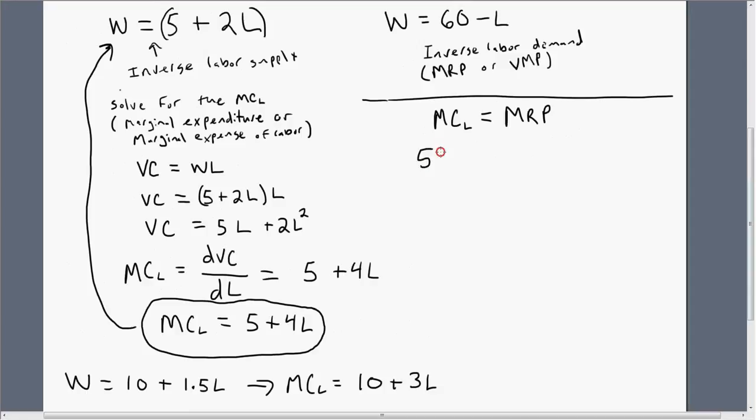So taking our 5 plus 4L, setting that equal to the inverse labor demand equation, which is 60 minus L, and now solving for L, the monopsonist will hire 11 workers.